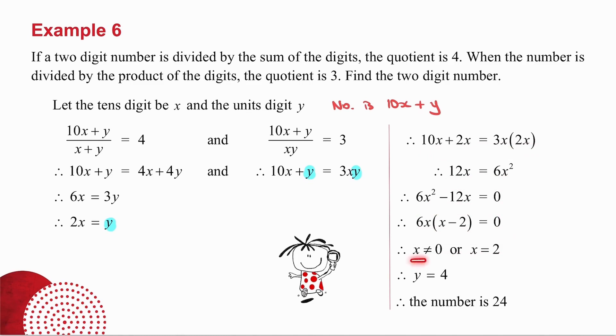If X is equal to 0, then my number is no longer a two-digit number because it starts with a 0, so it can't be a two-digit number. So X cannot be 0, it can only be 2. If X is 2, then Y is 2 times 2, which is 4, which means my number is 24.